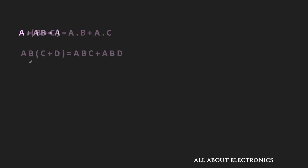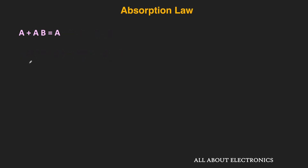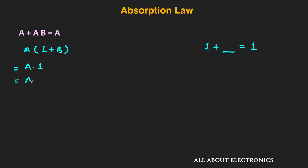Alternatively, anything which is common in both terms can be taken outside as a common factor. For example, a + ab = a. In this case, a is common in both terms. If we take a outside, we get a·(1 + b). We know that 1 + something is always equal to 1, so this term becomes 1. That means we have a·1, which equals a. Therefore a + ab = a.